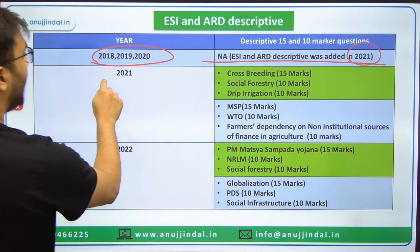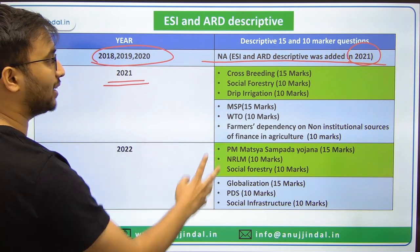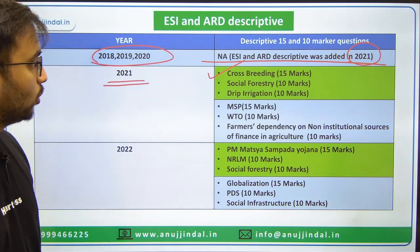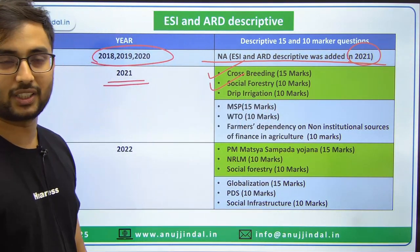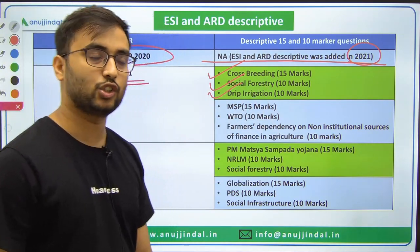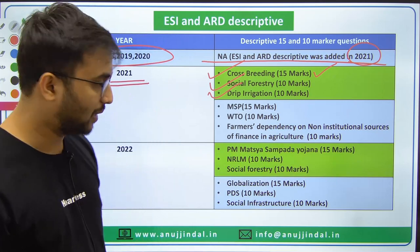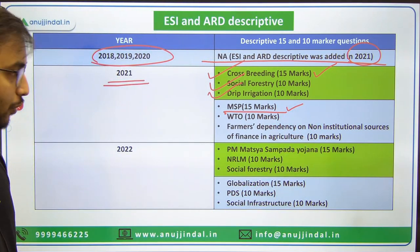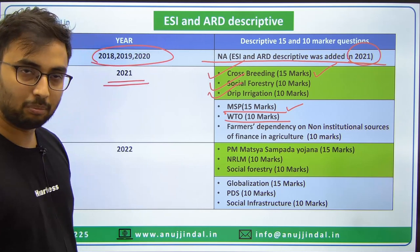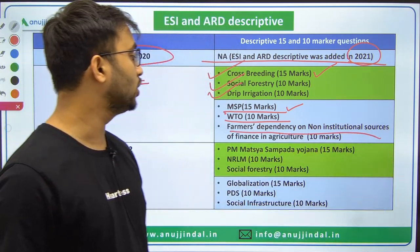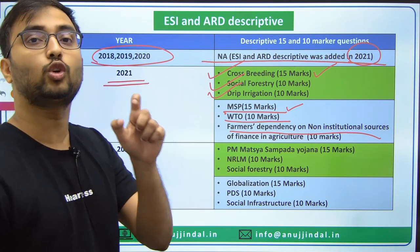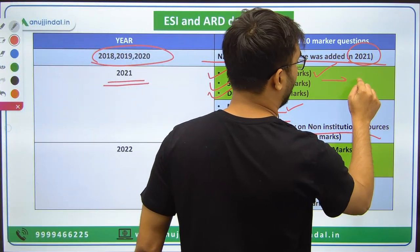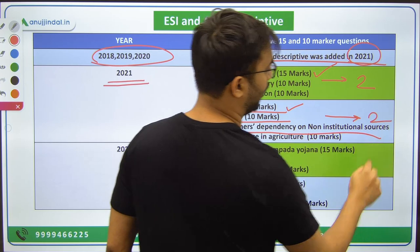In 2021, the green part represents ARD and blue part represents ESI questions. ARD topics asked: Crossbreeding — advantages and disadvantages (compulsory, 15 marks); Social forestry — components and objectives; Drip irrigation — advantages and disadvantages. For ESI in 2021: MSP (compulsory, 15 marks); WTO-related question (10 marks); Farmers' dependency on non-institutional sources of financing (10 marks). Out of 6 questions, you solve any 4 — any 2 from ARD and any 2 from ESI.